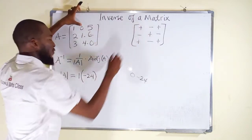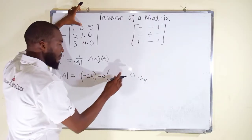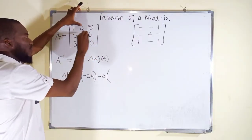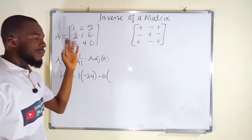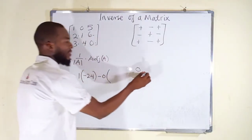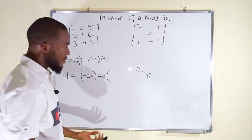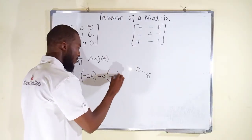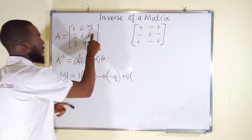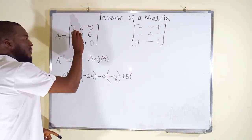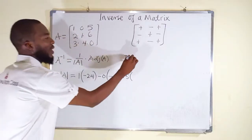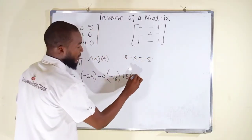For the second entry, we close its row and column. We find the determinant: 2 times 0 is 0, minus 3 times 6 is 18. So 0 minus 18 is negative 18. The last entry, 5, is positive. Closing its row and column: 2 times 4 is 8, minus 3 times 1 is 3. This equals 5. So the third term gives 5.